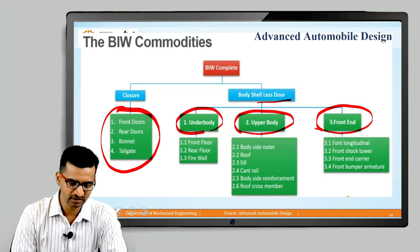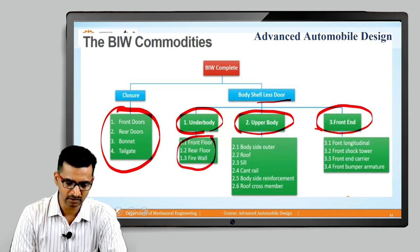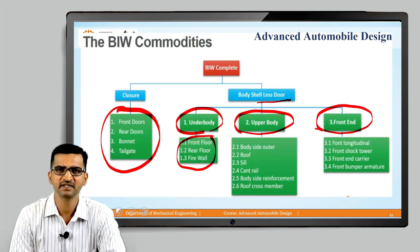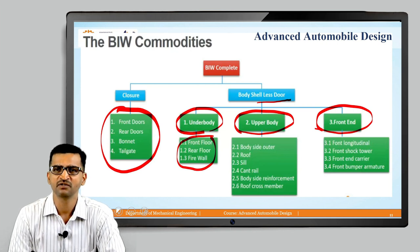The underbody is front floor, rear floor, and firewall. Upper body structure includes body side outer, roof, sill, cant rail, body side reinforcement, and roof cross members. Front end structure includes front longitudinal, front shock towers, front end carriers, and front bumper armatures.